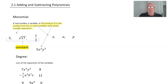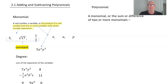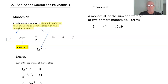The next term we want to know is polynomial. A polynomial is either a monomial or it's the sum or difference of two or more monomials, which are known as terms. So a monomial like 5 — that's a polynomial. x⁶ is a polynomial. 42ab⁹ is a monomial, and a monomial is a polynomial.